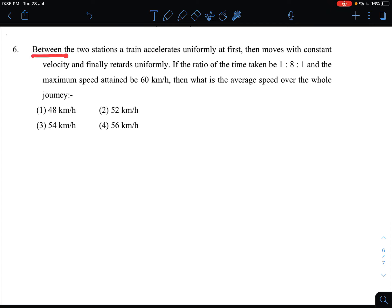In question number six, between two stations a train accelerates uniformly at rest, then moves with constant velocity, and finally retards uniformly. If the ratio of time taken is 1:8:1 and the maximum speed attained is 60 km/h, then what is the average speed over the whole journey?